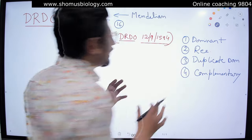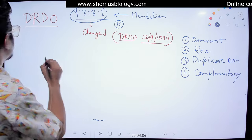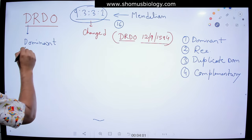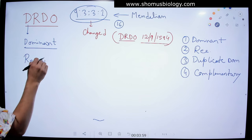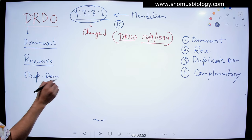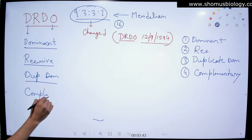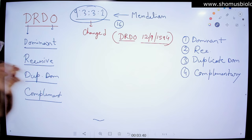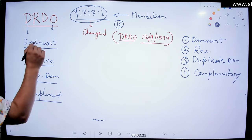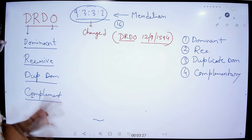Let's decipher this mnemonic. DRDO: the first D stands for Dominant, R stands for Recessive, the second D stands for Duplicate Dominant, and O stands for Complementary — we emphasize the O in DRDO just to rhyme it. So we have four types: dominant, recessive, duplicate dominant, and complementary.